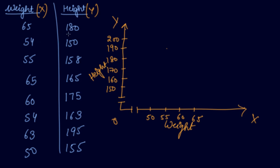First is 65 and 85. When your weight is 65, then your height is 180. So, 65 and 180, you have some of the point here. The other point is from 150 and 54. Then 55 and 158, 65 and 165.